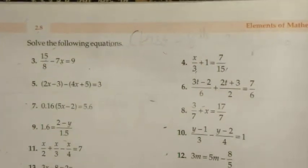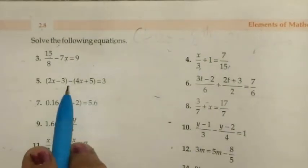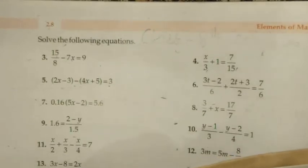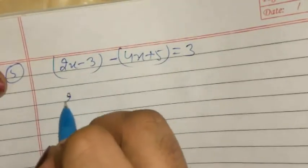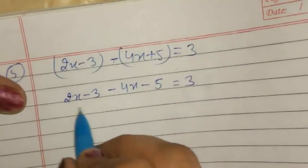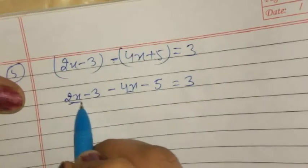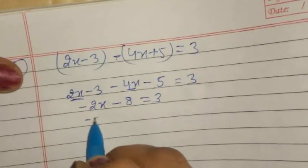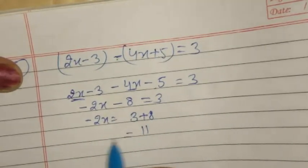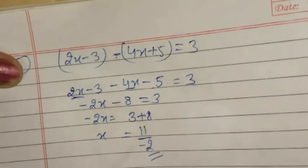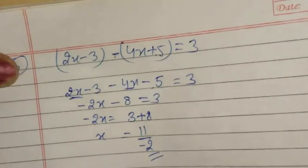Question 5: solve 2x - 3 - (4x + 5) = 3. First open the bracket: 2x - 3 - 4x - 5 = 3. Combining like terms: -2x - 8 = 3. Transposing -8: -2x = 3 + 8 = 11. So x = -11/2.